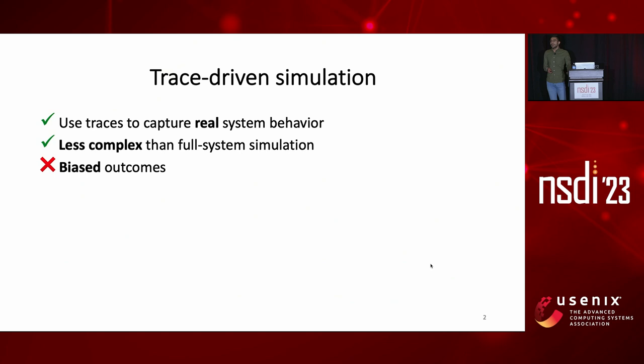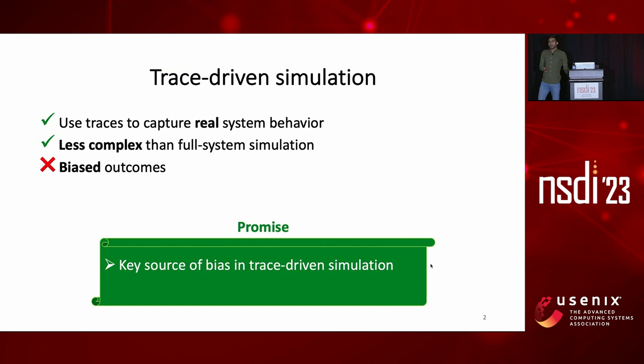Trace-driven simulation is a widely used method for evaluating new ideas in systems, which uses traces to capture the real behavior of parts of the system without going through the complexity of simulating all the system components. But the problem is that it's often not very accurate. The issue of bias in outcomes of trace-driven simulation has been observed in prior work, and we also observe it in our experiments. By the end of this talk, you'll learn about a key source of bias in trace-driven simulation, and also how to remove it for doing unbiased trace-driven simulation.